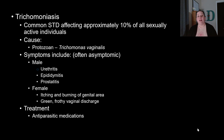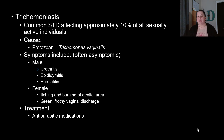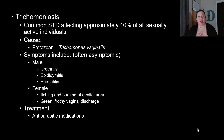Trichomoniasis affects approximately 10% of all sexually active individuals and is caused by the protozoan Trichomonas vaginalis — not a bacterium. Protozoa are harder to treat because their cells are similar to human cells. Symptoms are often asymptomatic, especially in males, though males can develop urethral, epididymal, or prostatic inflammation. In females, the hallmark symptom is a green, frothy vaginal discharge. Treatment uses antiparasitic medications.